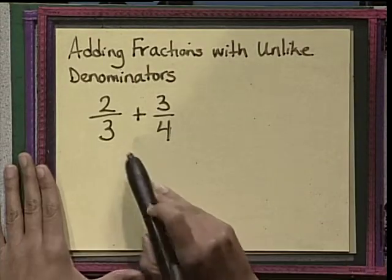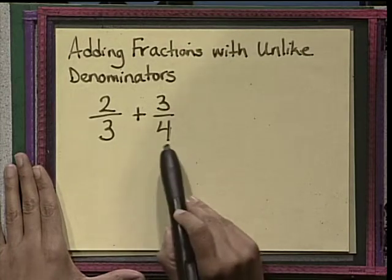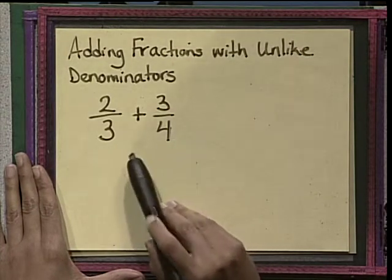Let's go ahead and look at an example. In this example, the two denominators are not the same. This means they are unlike.